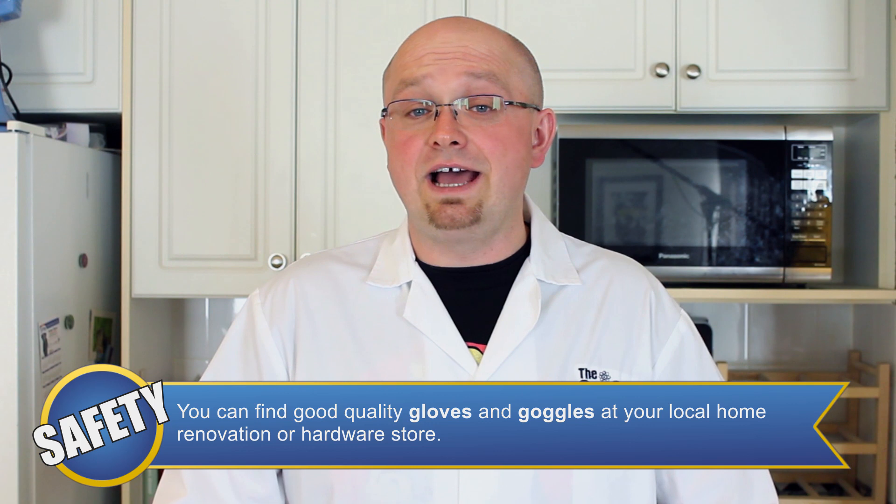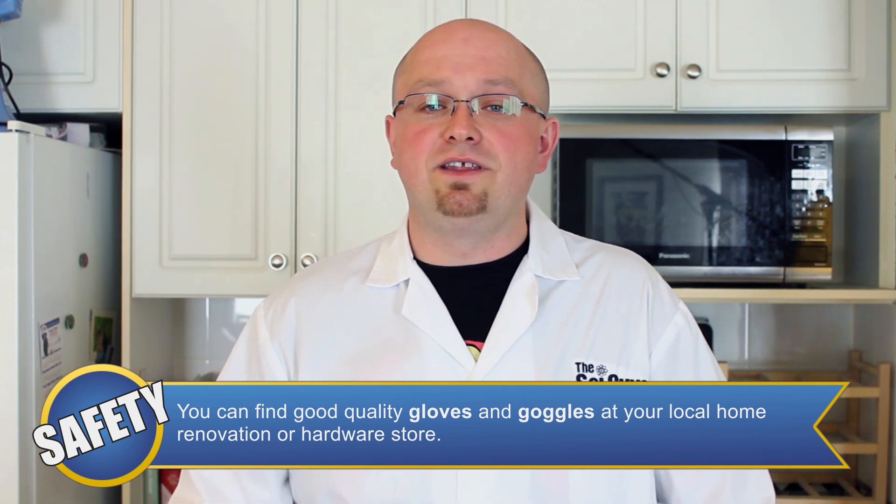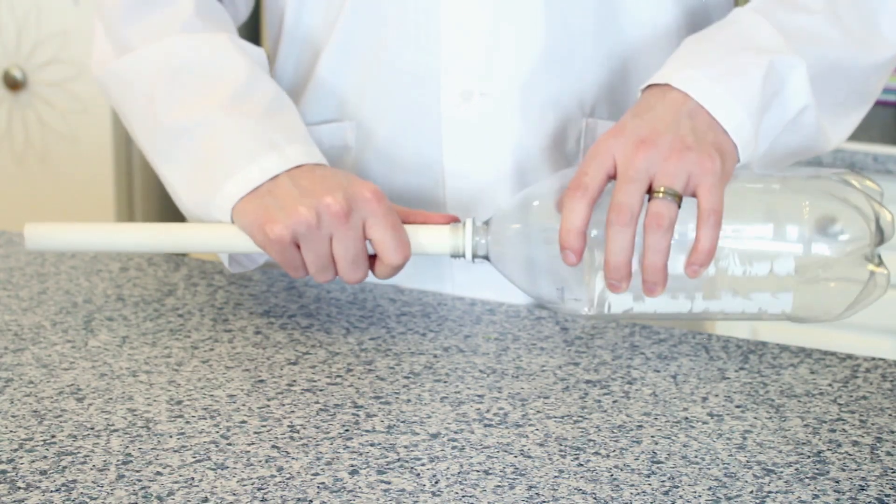Although we're not dealing with anything hazardous in this episode, we still recommend the use of eye protection, as we are dealing with projectiles. The first step in our experiment is to build our launcher. Take your empty two-liter bottle and your first length of foot-long PVC pipe and put one end of the pipe into the bottle.